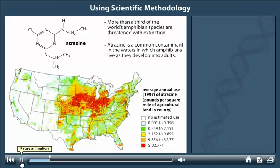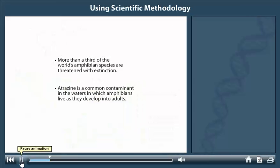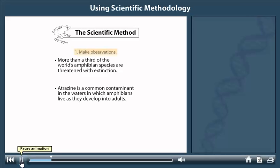A few experiments from Hayes Laboratory will highlight a scientist's most powerful tool, the scientific method. The first step is to make observations. In this case, Hayes notes that amphibians are in decline, and that atrazine is a common contaminant in waters in which amphibians live.